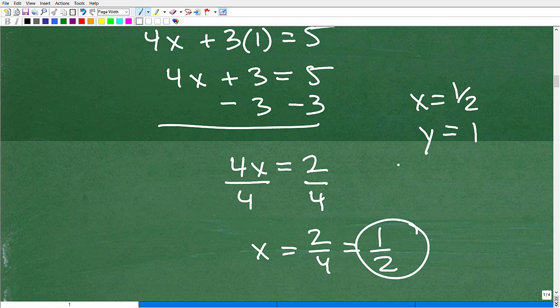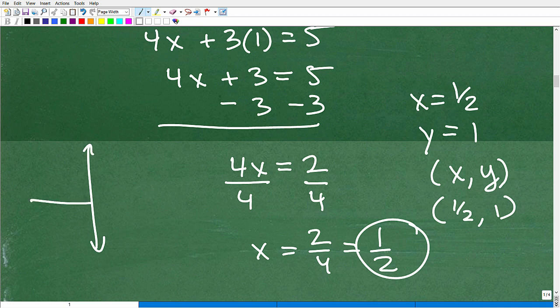But remember, what this means conceptually is it's the point XY. In other words, it's the point one half, one on our XY plane. So one half, one, like right here, that is the location, the specific location that these lines, if I were to graph these lines, that those lines would intersect.